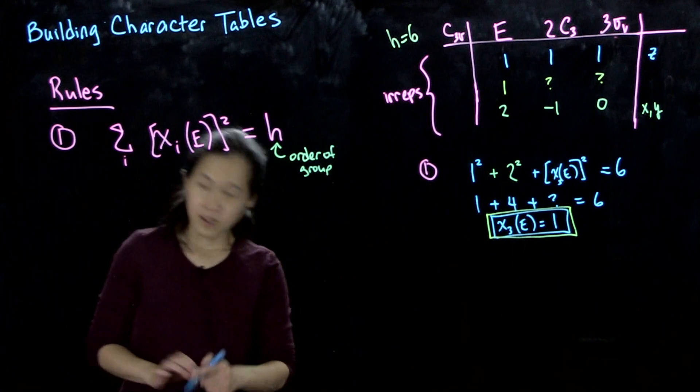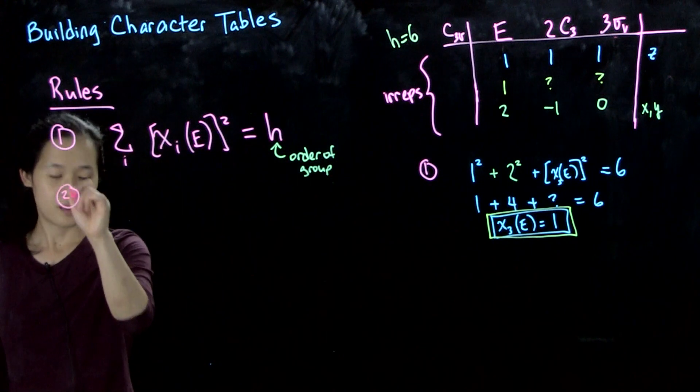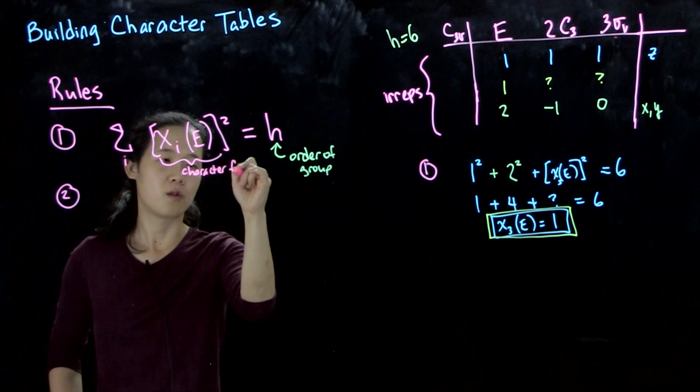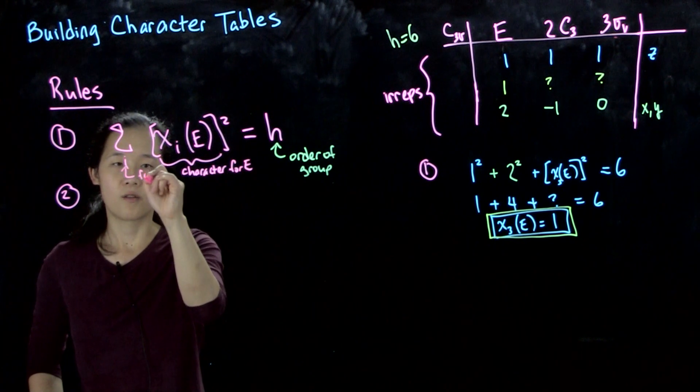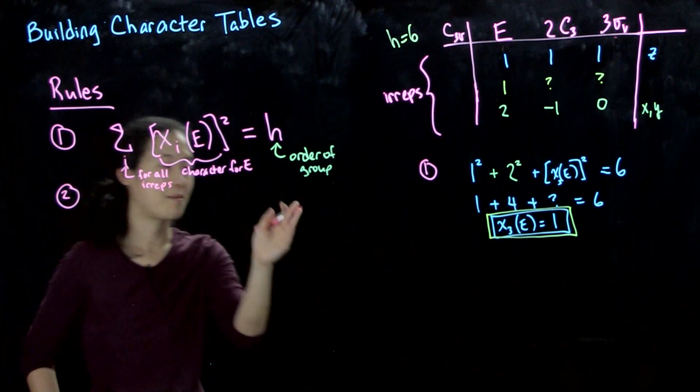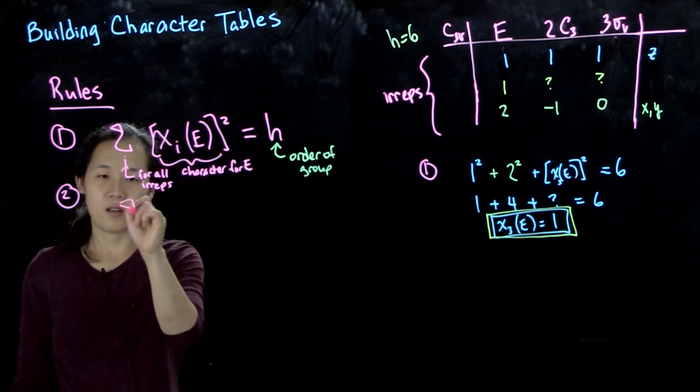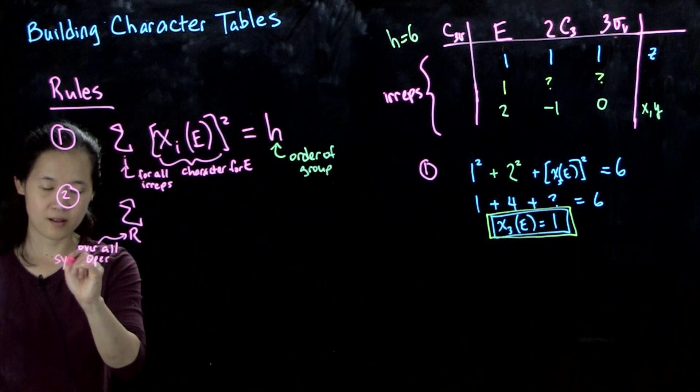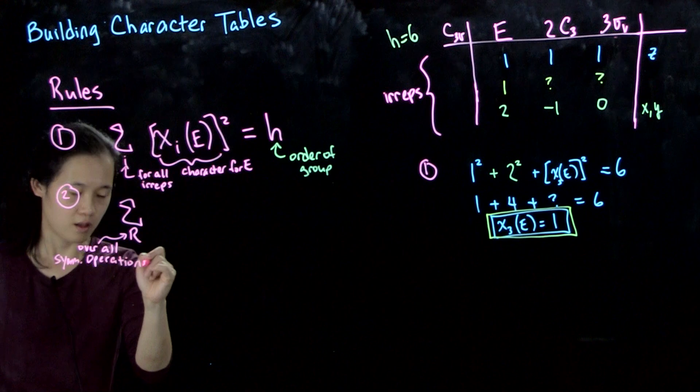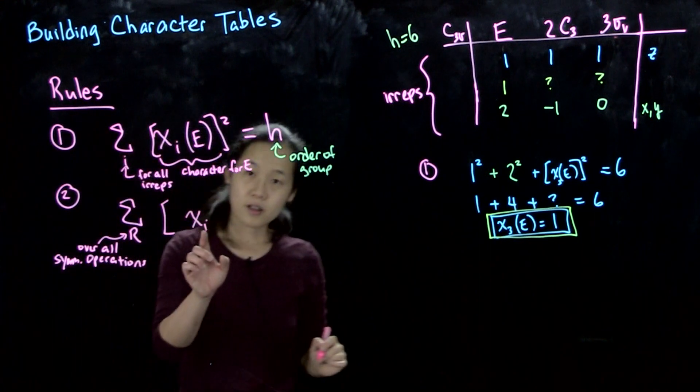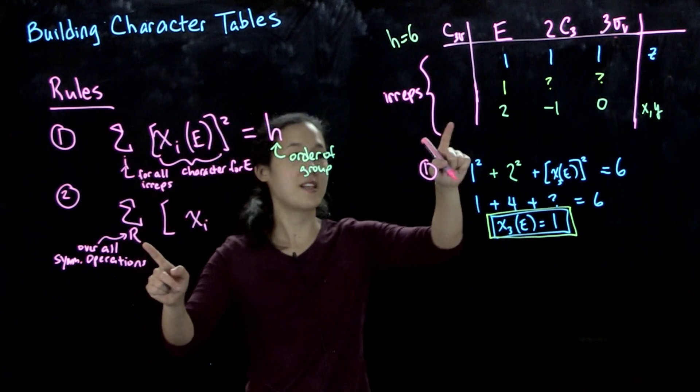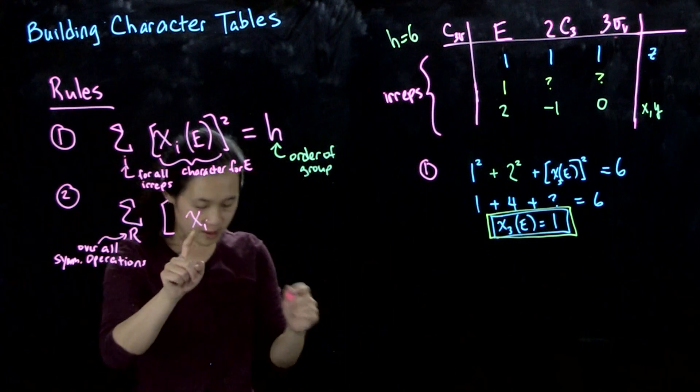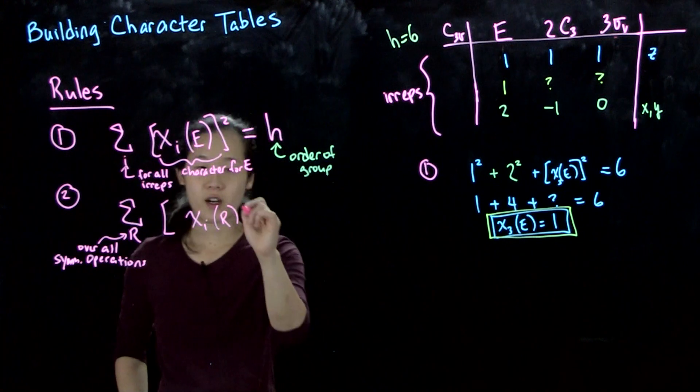The second rule is if you sum over R, over all symmetry operations, the character for one EREP, when you sum over all operations. So basically now we're going across. In this first rule we were going down, because we're summing over all EREPs. Here we're summing over all operations, and we're going across the table rather than down. So the character for an R squared also equals H.